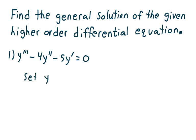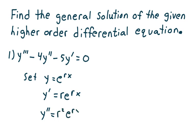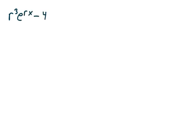We're going to set y equal to e to the rx. y prime is r e to the rx. y double prime is r squared e to the rx. And y triple prime is r cubed e to the rx. Making my substitution, I get r cubed e to the rx minus 4r squared e to the rx minus 5r e to the rx equals 0.